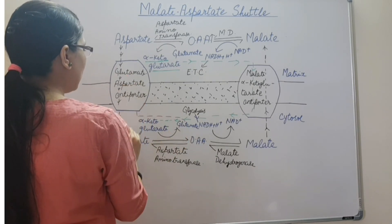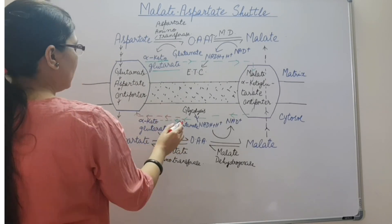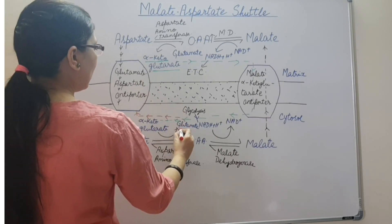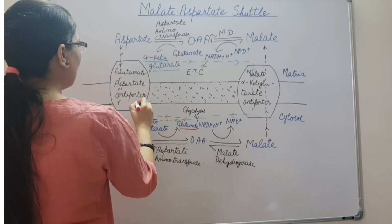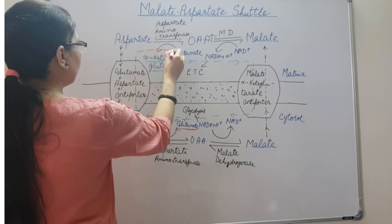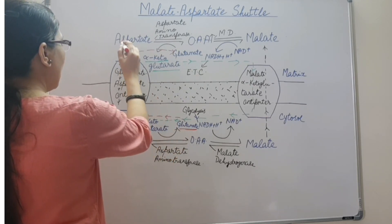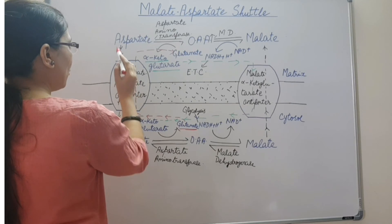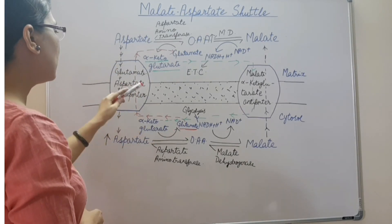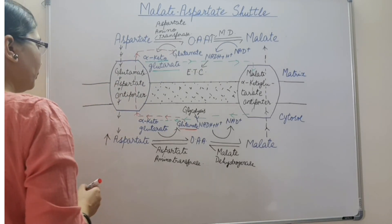The export of aspartate from the matrix to the cytosol is coupled with the import of a certain molecule from the cytosol to the matrix, and this molecule is glutamate. That means aspartate is exported from the matrix to the cytosol, and glutamate is imported by the mitochondrial matrix from the cytosol.